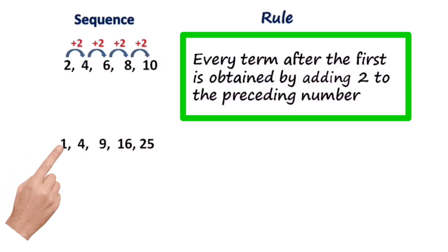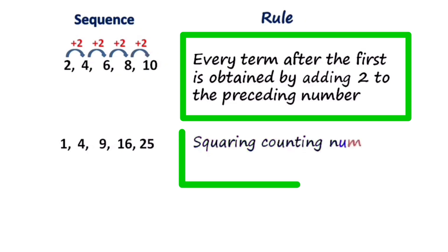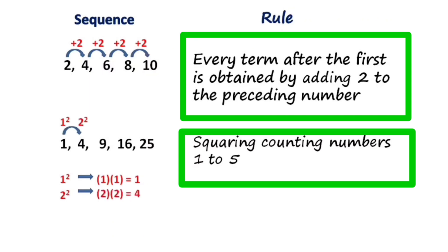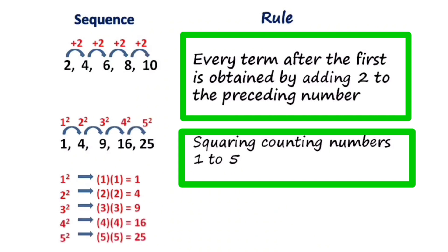Next sequence: 1, 4, 9, 16, 25. The rule is squaring counting numbers from 1 to 5. For the first term, we have 1 squared: 1 times 1 equals 1. For the next term, 2 squared: 2 times 2, the product is 4. For the third term, 3 squared: 3 times 3 equals 9. For 4 squared and 5 squared, we apply the same process to determine the remaining terms.